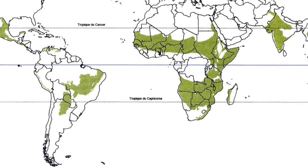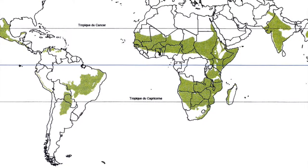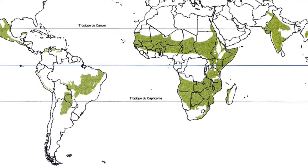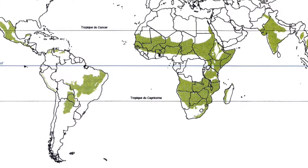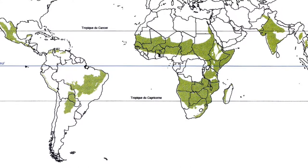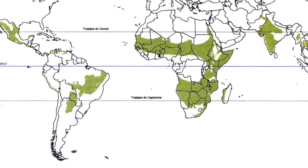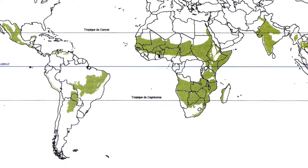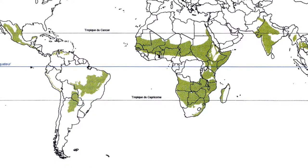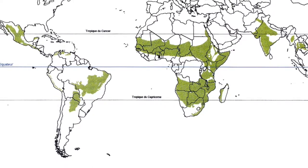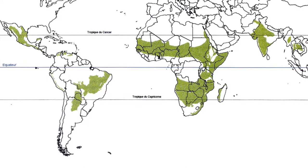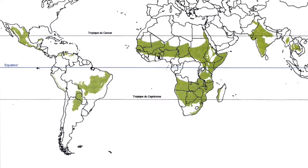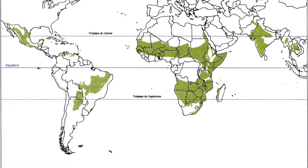The tropical dry forest biome, also known as the dry broadleaf forest, can be found in southern Mexico, southeastern Africa, central India, Indochina, Madagascar, eastern Bolivia, central Brazil, the Caribbean, and along the coasts of Ecuador and Peru. Typically, the tropical dry forests are located at tropical and subtropical latitudes.